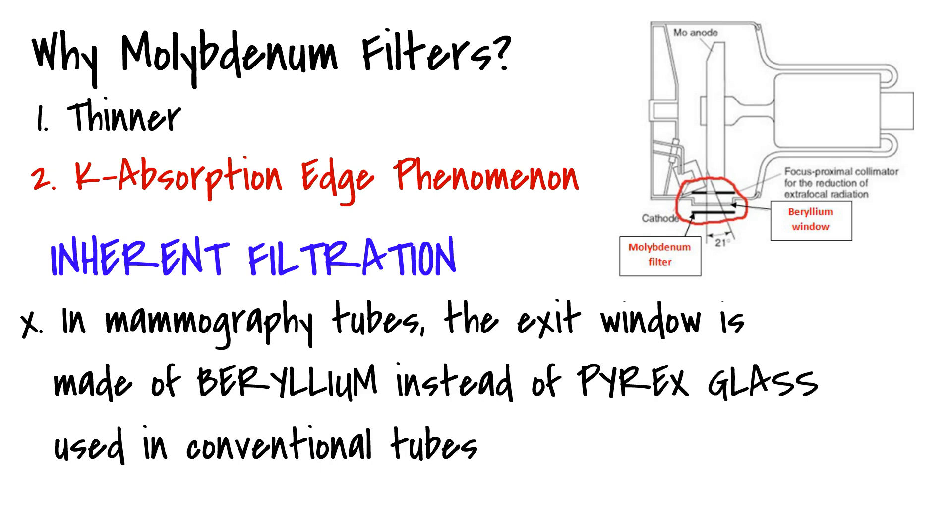Like you may have guessed, pyrex glass is too thick to allow the low-energy mammography photons to pass through. So, the exit window of a mammography tube is commonly made of beryllium instead.